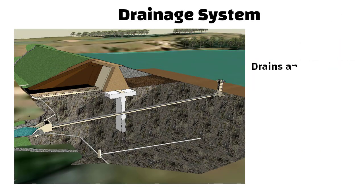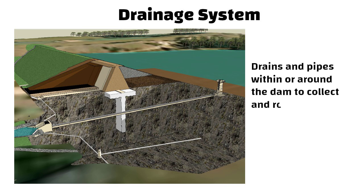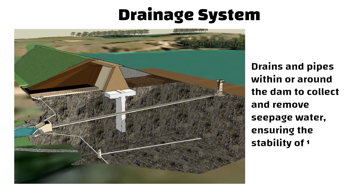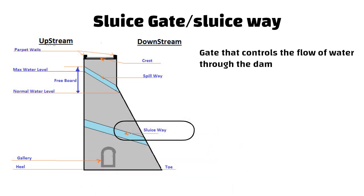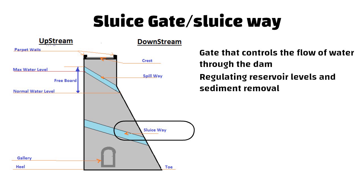Drainage system. A drainage system consists of drains and pipes within or around the dam to collect and remove seepage water, ensuring the stability of the dam. Sluice gate or sluice way. Sluice way is the gate that controls the flow of water through the dam. It is used for regulating reservoir levels and sediment removal.